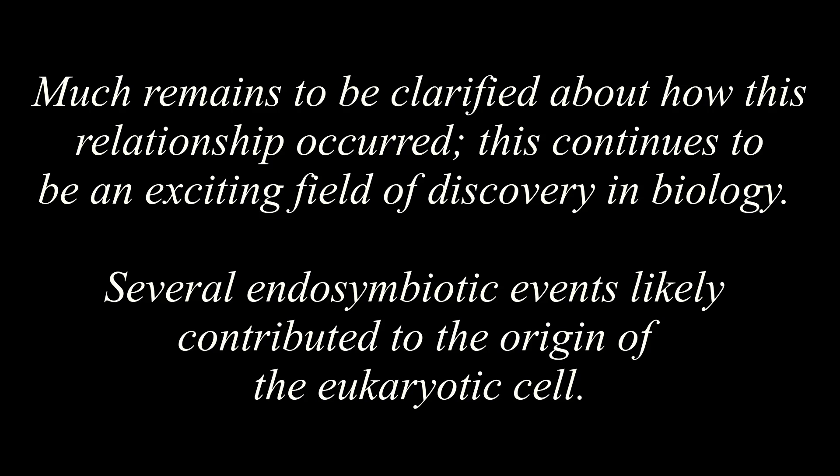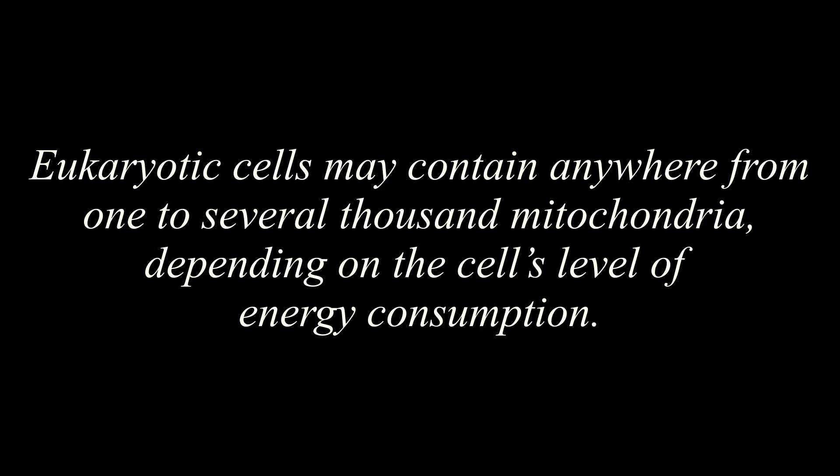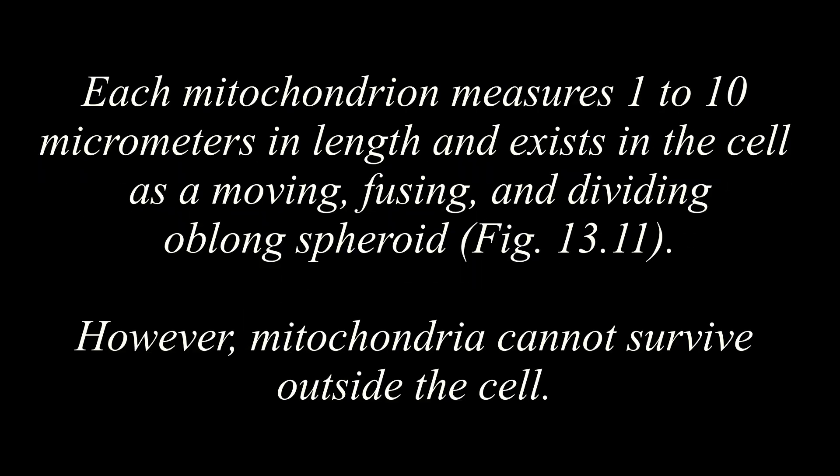Several endosymbiotic events likely contributed to the origin of the eukaryotic cell. Mitochondria. Eukaryotic cells may contain anywhere from one to several thousand mitochondria, depending on the cell's level of energy consumption. Each mitochondrion measures one to ten micrometers in length and exists in the cell as a moving, fusing, and dividing oblong spheroid. However, mitochondria cannot survive outside the cell.